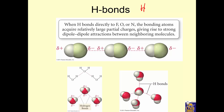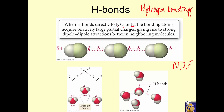Hydrogen bonding — when hydrogen is involved in a molecule and it's bonded only to nitrogen, oxygen, or fluorine, then that bond is really polar, so that makes the overall molecule very polar. It's a super strong attraction. It only happens when there's hydrogen in a molecule that's bonded to N, O, or F. It makes the molecule super polar — not only polar, but superpolar — and so it's an extra strong intermolecular force.